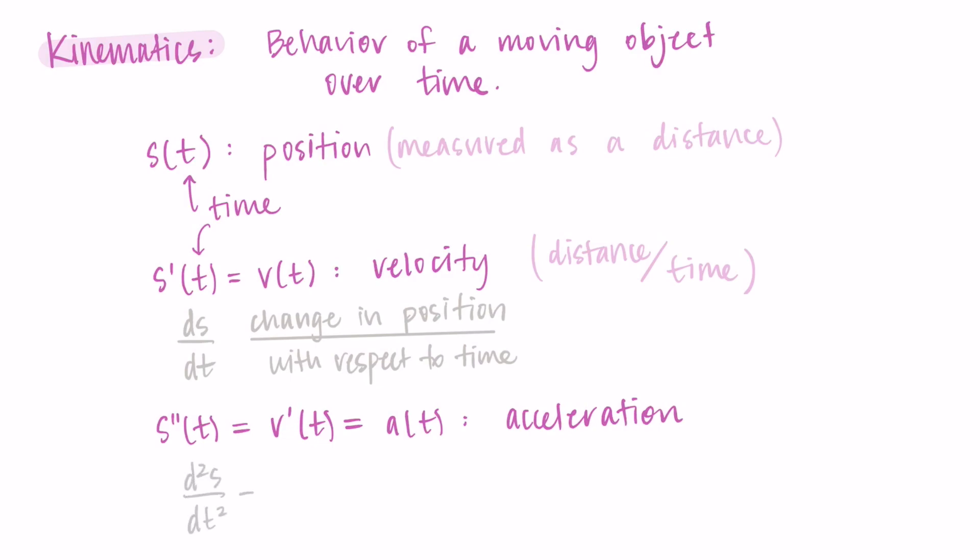If we are increasing our velocity, that would be a positive acceleration. If the velocity is decreasing, that would be a negative acceleration. I think driving a car is the simplest way to think about this. When you're speeding up, the velocity is increasing - you're accelerating. When you're slowing down, the velocity is decreasing, so you are decelerating.